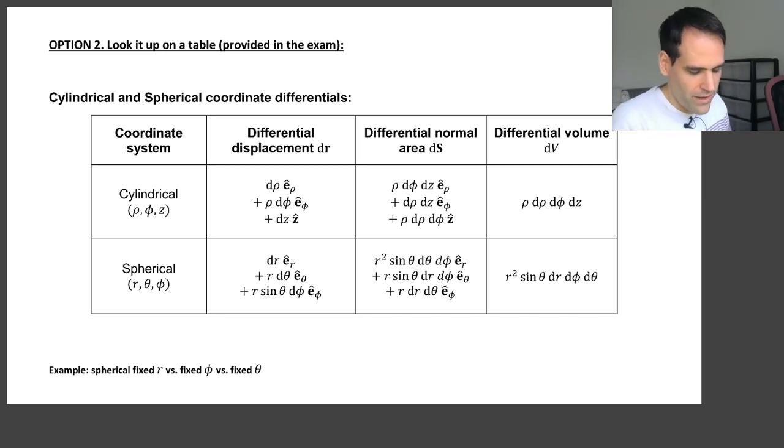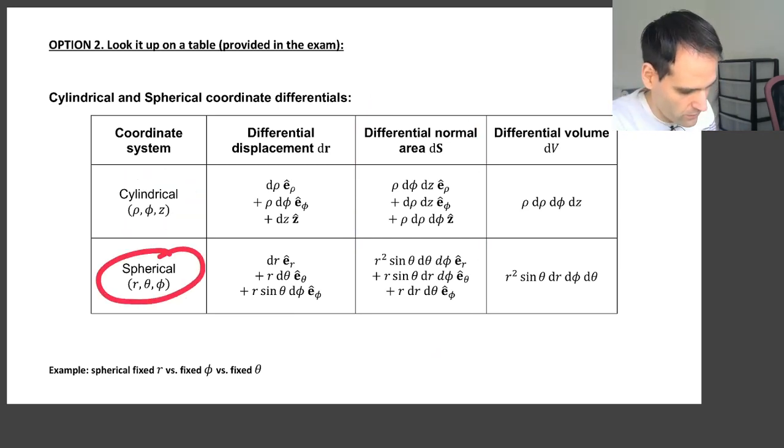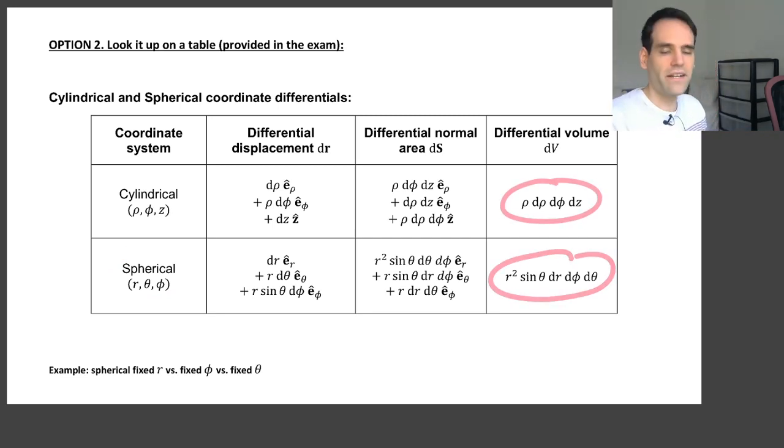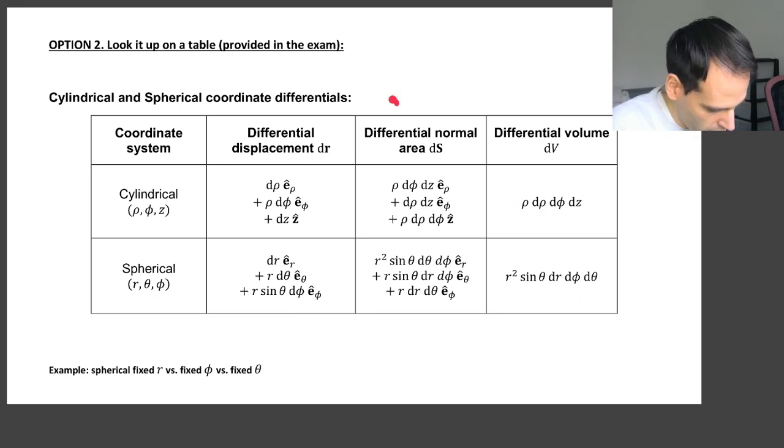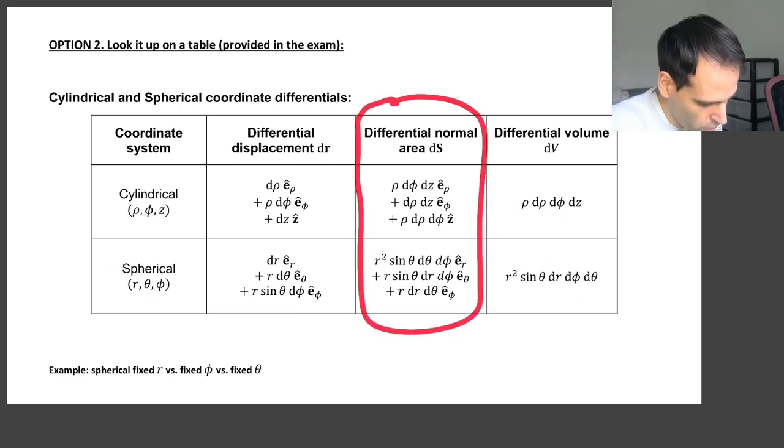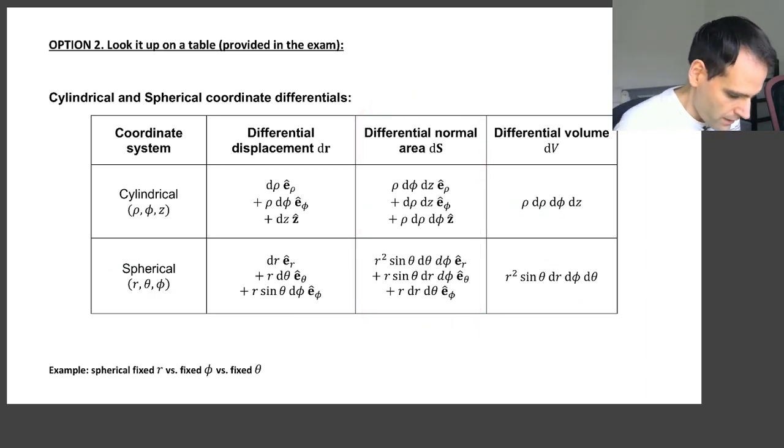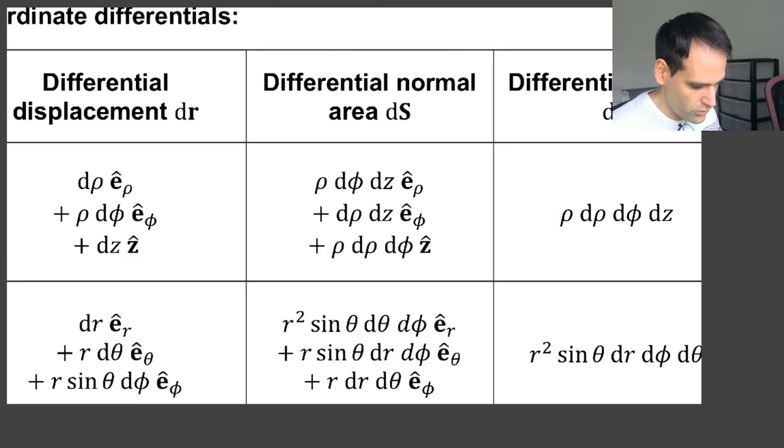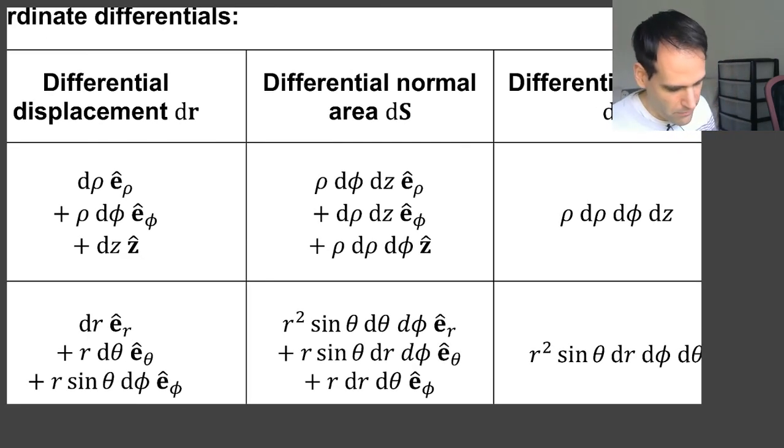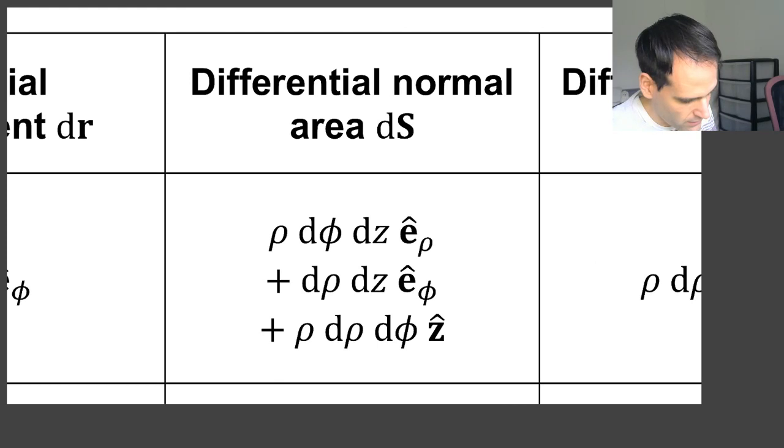So in this table, if you want to find dS, you have to look at this column. Notice that this row corresponds to cylindrical coordinates, and this row corresponds to spherical coordinates. You already saw this table when I talked about finding dV in spherical and cylindrical coordinates. But now we are talking about surface integrals, so we have to look at this column. Now, one thing that should surprise you is that here I'm giving dS as a vector. Notice that this is bold because this is a vector.